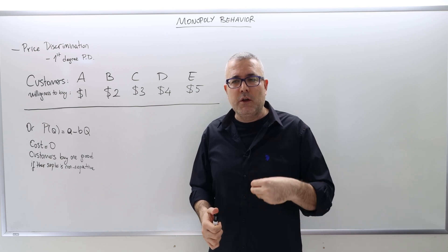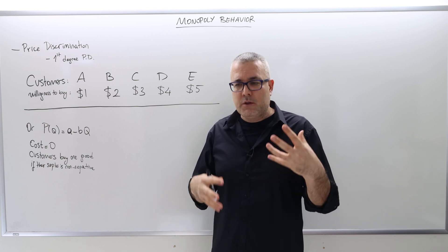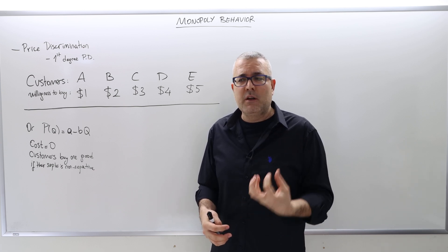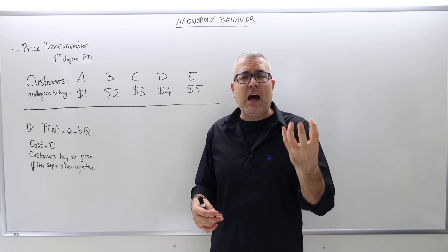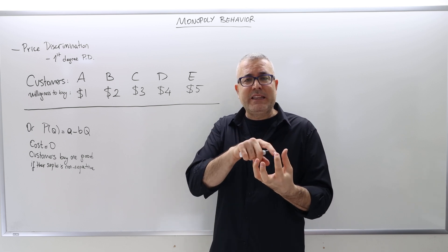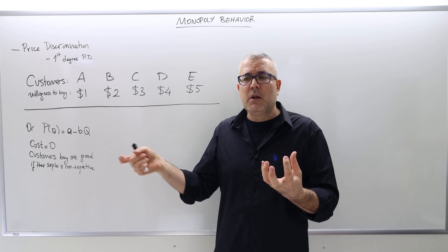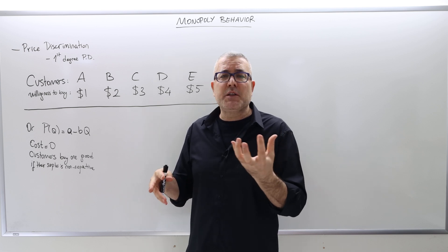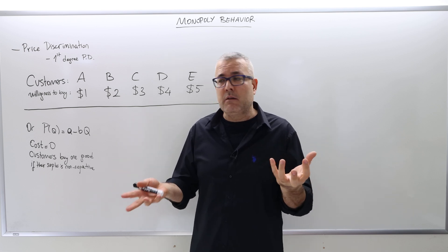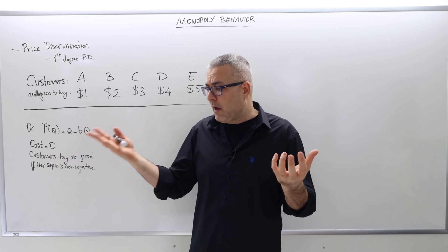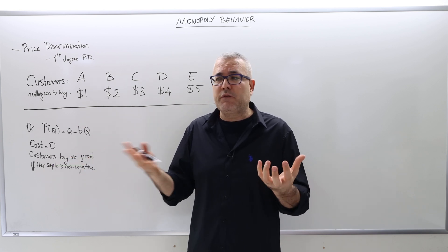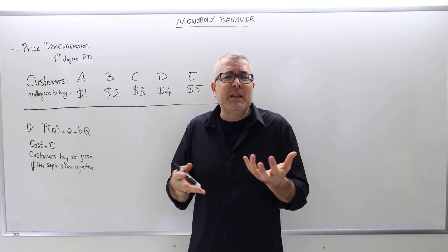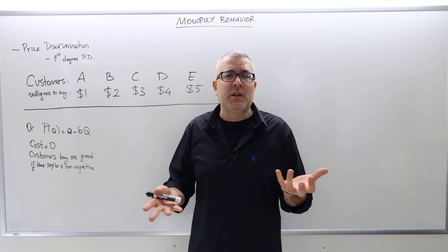Once you buy the good, you're going to enjoy it and derive some utility. This utility gives you pleasure. Anticipating this, the question is: how can you translate this utility into monetary terms? So I'm going to get X units of utility — how much does it mean to me? Five bucks. Then my willingness to pay for this good is five bucks. If I pay more than five bucks, it's not going to be worth it.